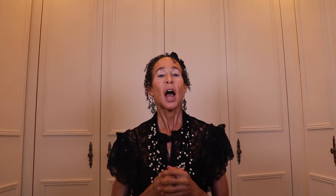The actual genetics are not as simple as what I showed you for eye color, but the basic principles of dominant versus recessive genes still apply. Here's the organization: there are three mutations for early onset Alzheimer's — APP, PSEN1, and PSEN2 — and one mutation for late onset Alzheimer's, which is APOE. Don't worry, I'll explain the acronyms as we address them. Let's go through them one by one.